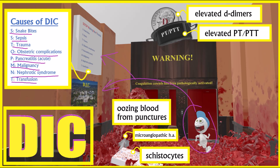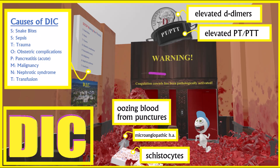What happens in D.I.C. is that there's a pathologic activation of the coagulation cascade, represented by the warning that the coagulation cascade has been pathologically activated. Normally it's only activated when a person gets a cut, but in D.I.C. it's activated when it shouldn't be. This leads to blood clots all over the body, consuming clotting factors, so clotting factors go down, leading to a bleeding state — blood oozing from puncture sites such as IV sites, the mouth, and other mucosal surfaces.